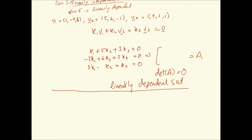Since the determinant is zero and there are infinitely many solutions, the set {V1, V2, V3} is a linearly dependent set. I'll leave solving the system fully as an exercise.